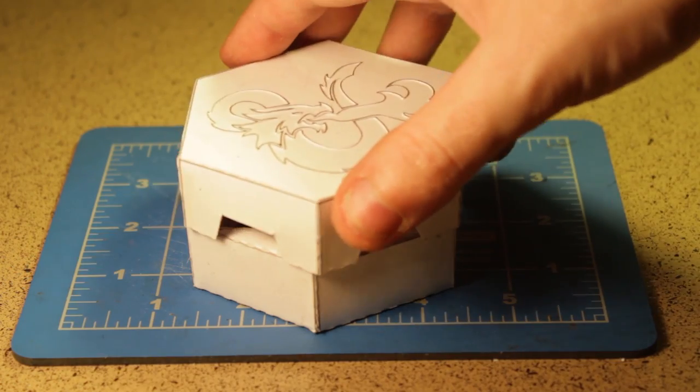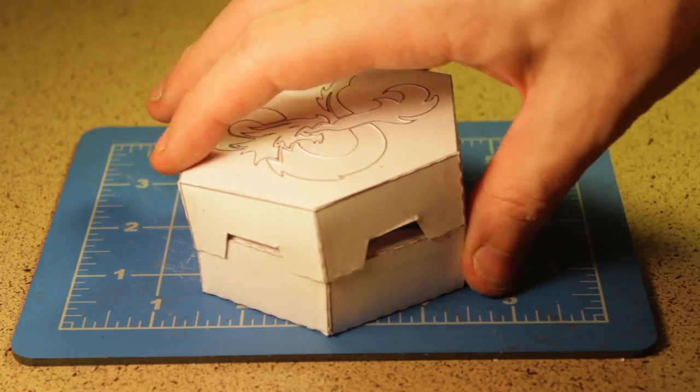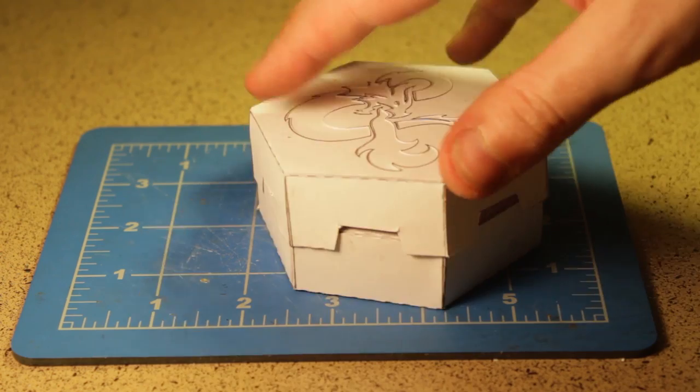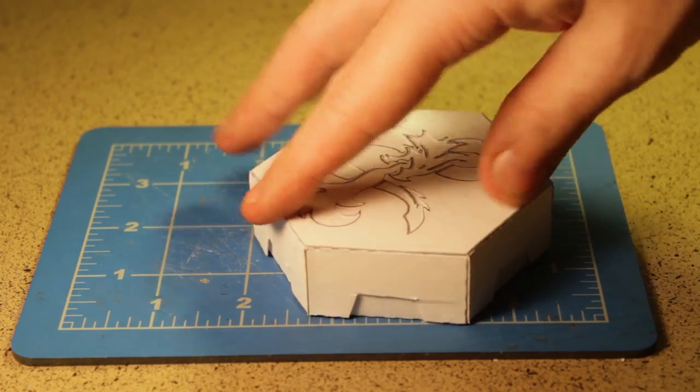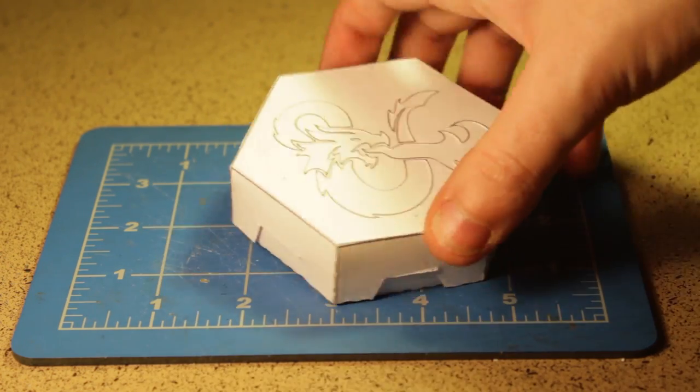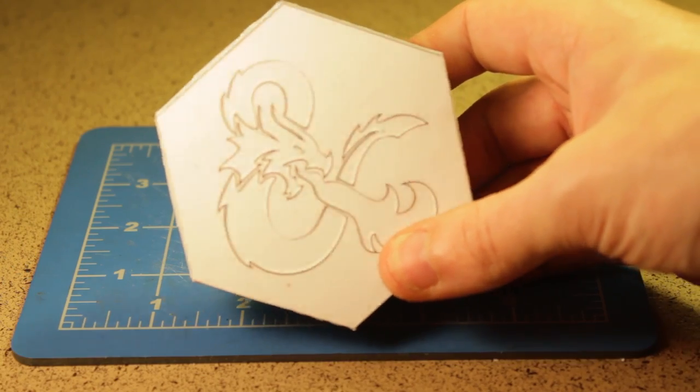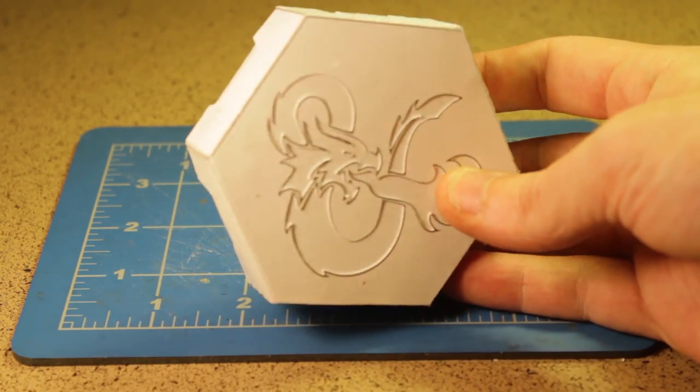Then you've got the lid. The first time you push this on, it's going to be a little tough, but this is just you helping it get into the right shape. There it is. Fits on fine. We got our ampersand, and we're looking pretty good, but I think it needs a little paint.